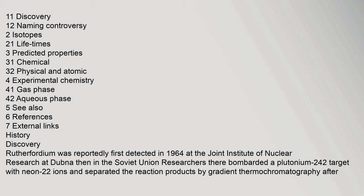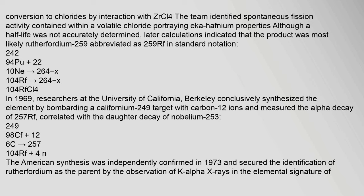Rutherfordium was reportedly first detected in 1964 at the Joint Institute of Nuclear Research at Dubna, then in the Soviet Union. Researchers there bombarded a plutonium-242 target with neon-22 ions and separated the reaction products by gradient thermochromatography after conversion to chlorides by interaction with zirconium chloride. The team identified spontaneous fission activity contained within a volatile chloride portraying hafnium-like properties, although a half-life was not accurately determined. Later calculations indicated that the product was most likely 259Rf.